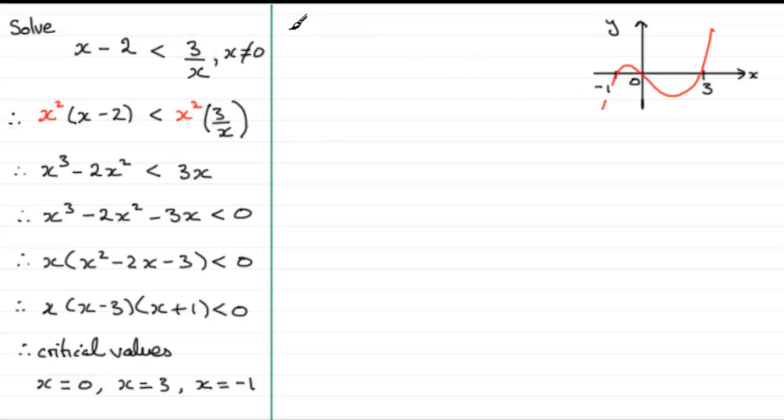So from the graph, what are the solutions going to be? Where is that inequality less than 0? Well clearly it's where you've got values of x less than minus 1. You can see this part of the graph is below the x axis so we've got x is less than minus 1. Or you can see that it's less than 0 when we're looking at values of x between 0 and 3. So we've got x can lie between 0 and 3. And that's our solution.